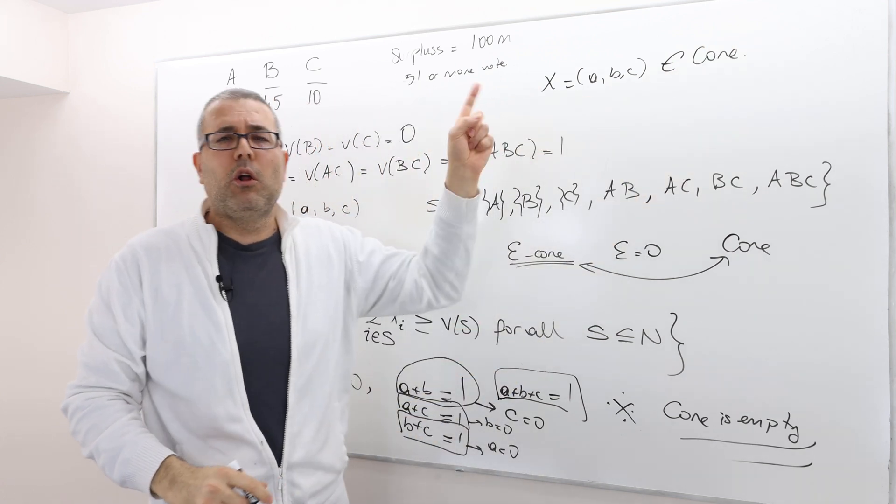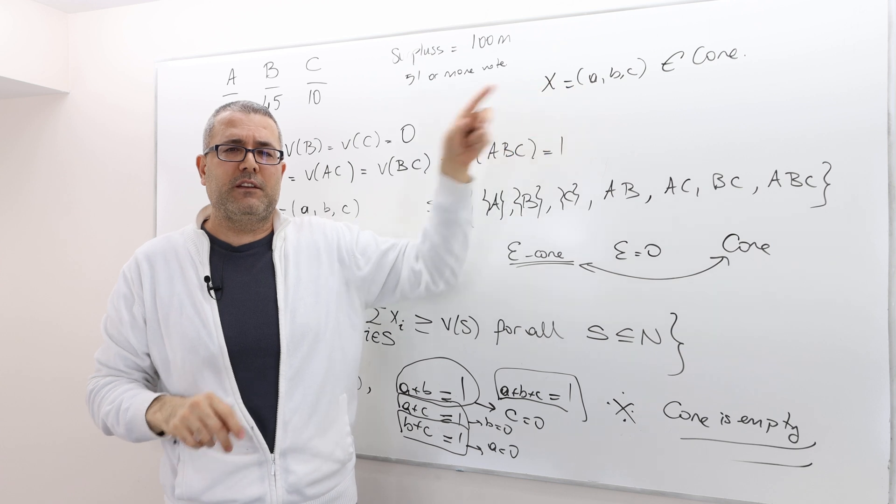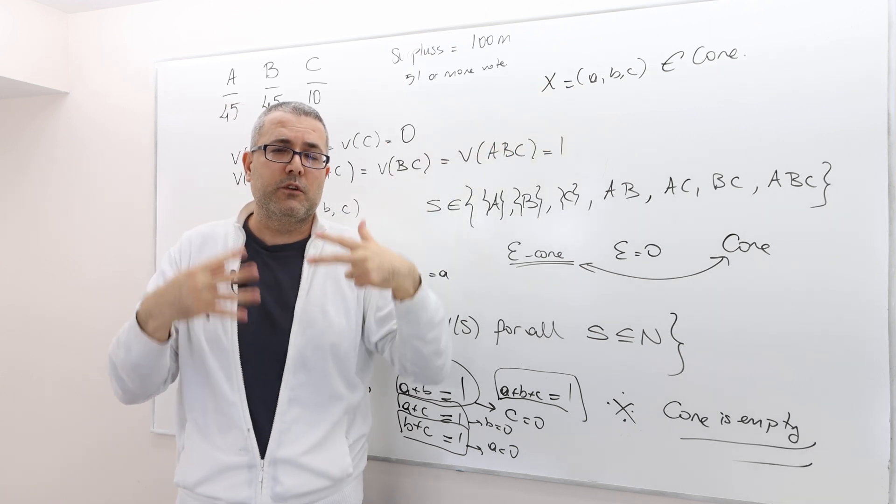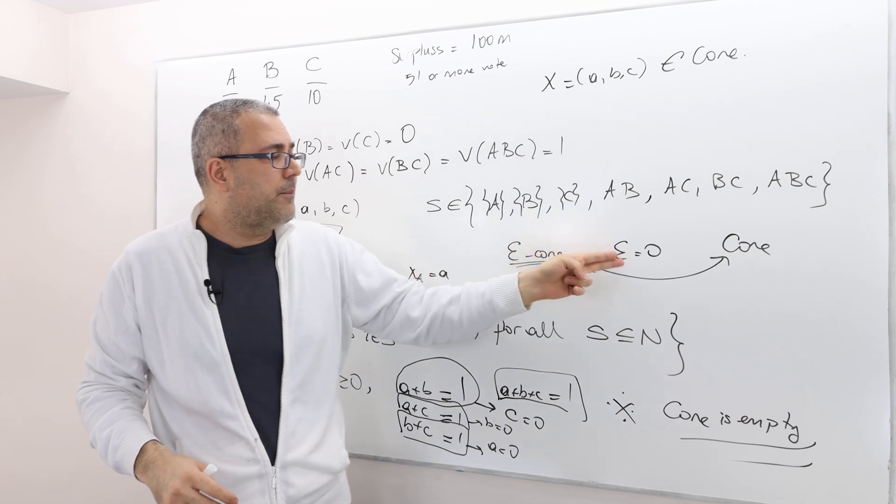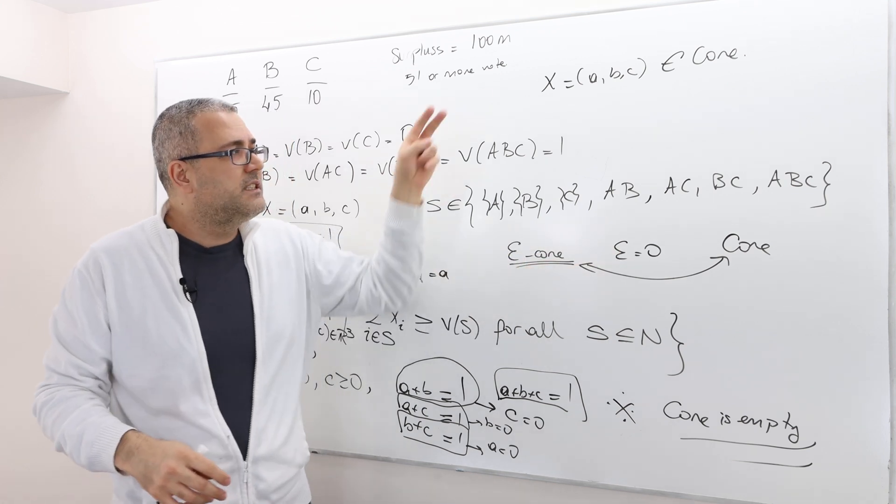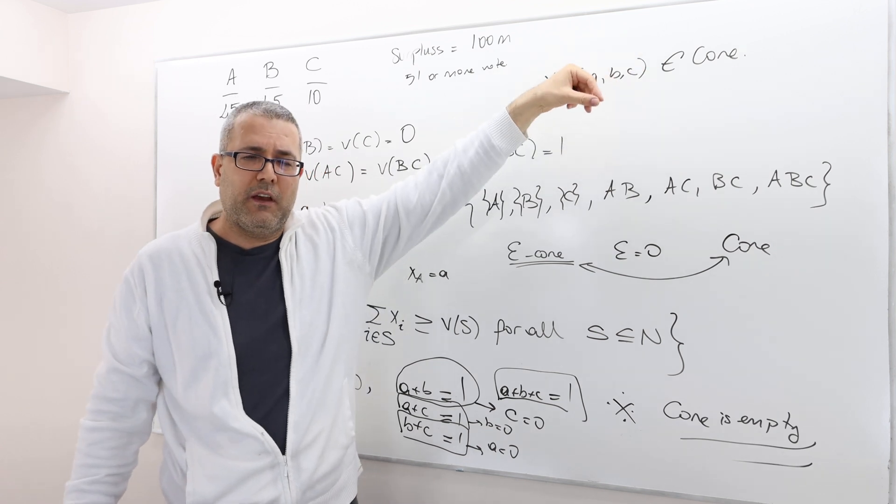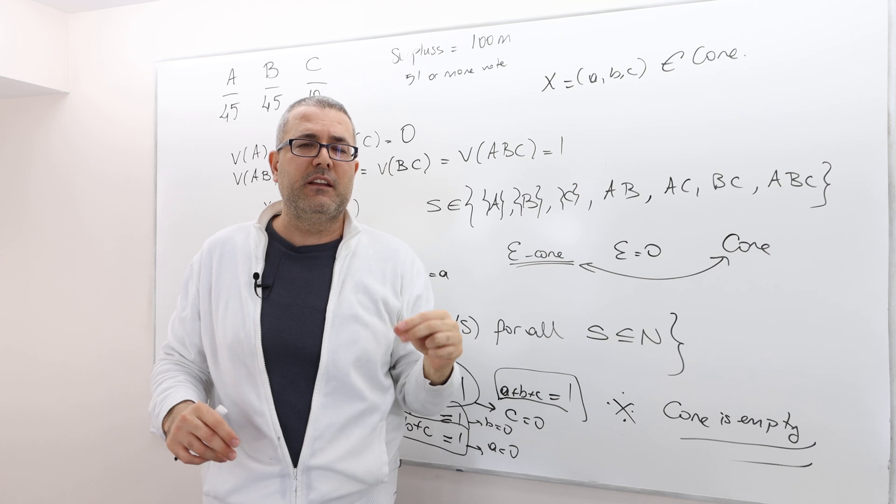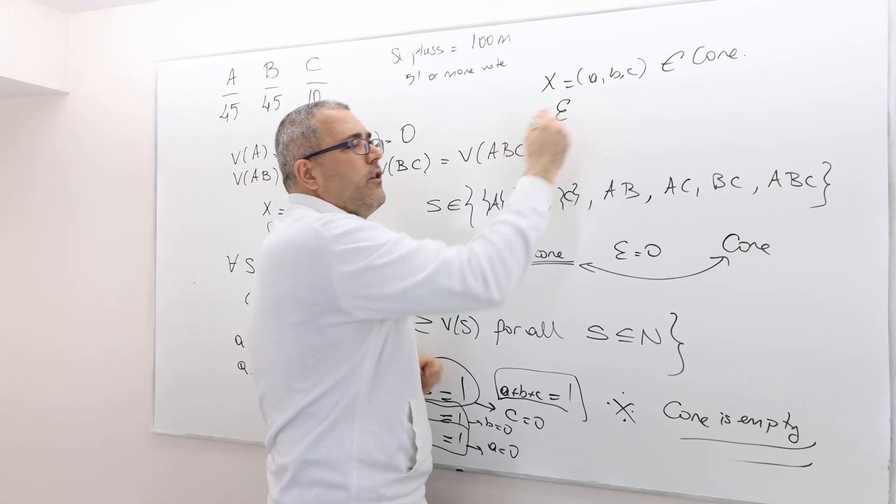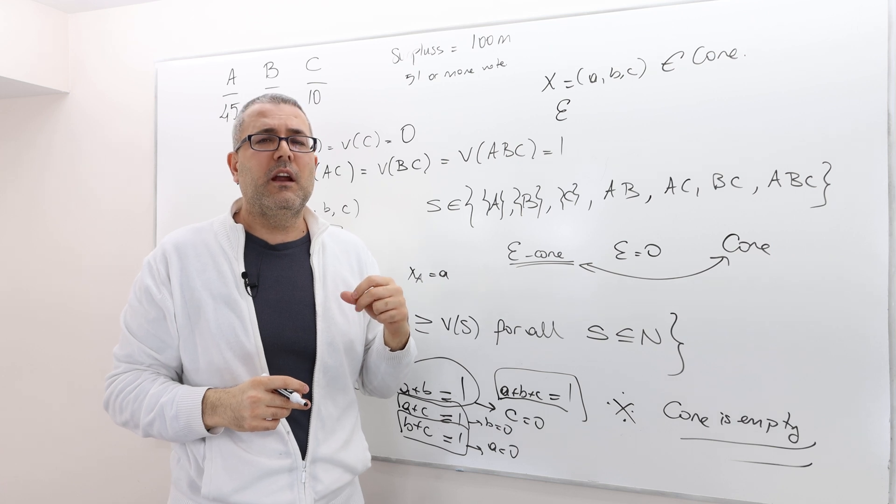That means no coalition has incentive to deviate from this payoff vector. So it can be one of the solutions of this problem. But the thing is, if epsilon is 0, has empty core, that means there is no such payoff vector, meaning everybody will always have an incentive to deviate. So here, the epsilon kind of measures how much incentive do they have.